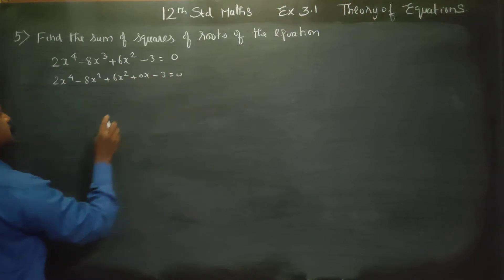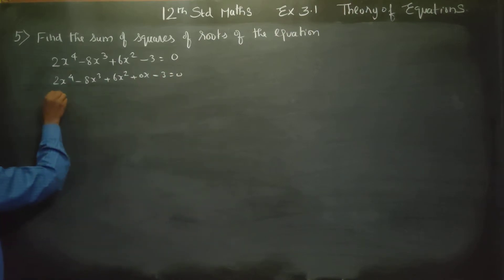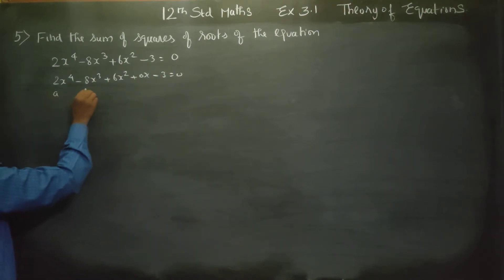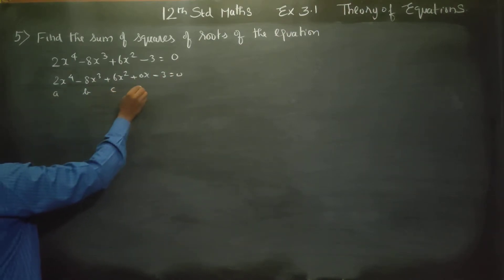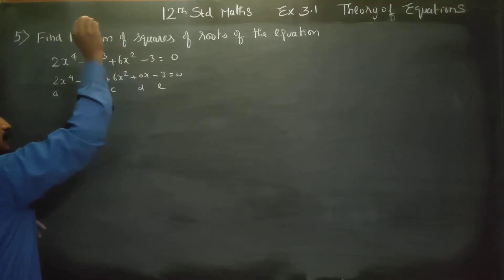Here the x term is there. This is my a, this is my b, this is my c, this is my d, and this is my e — identifying the coefficients of the polynomial.